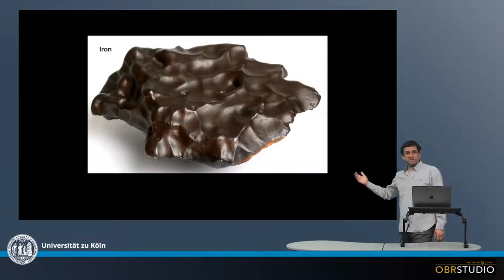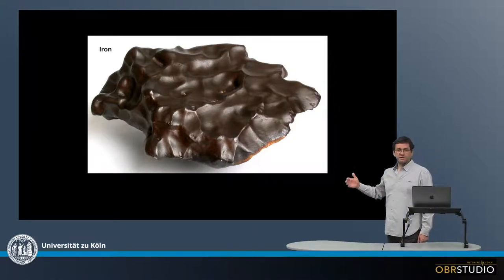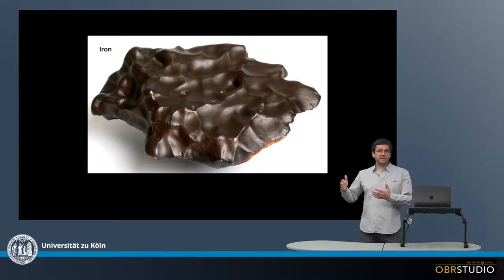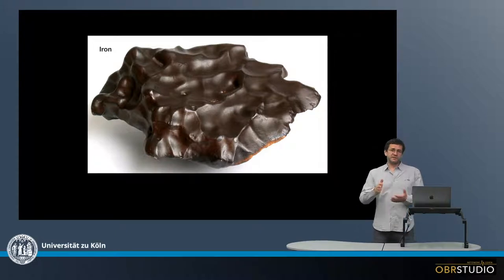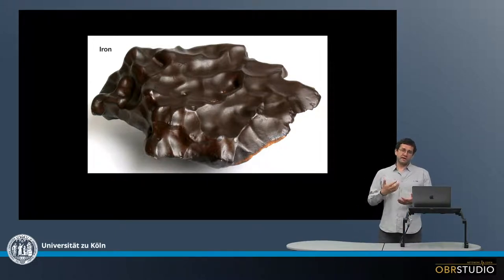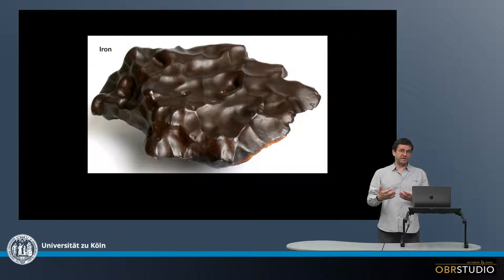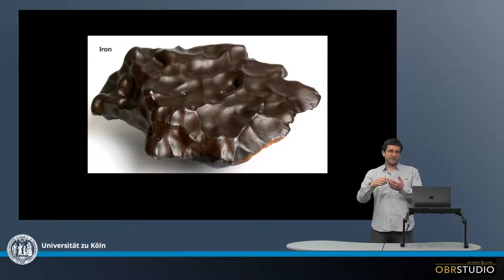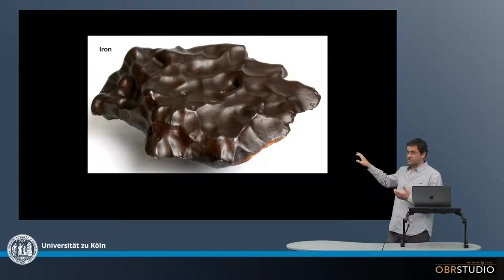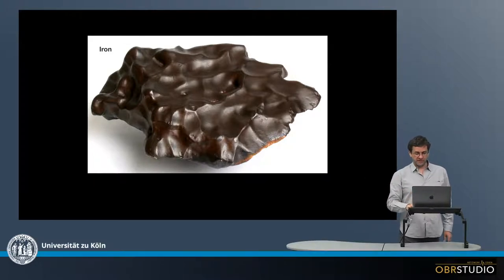This is an iron meteorite and this is from the outside. You can see this quite indented surface here, which forms while the meteorite is traveling through the Earth's atmosphere, is getting hot, and some small eddies from the atmosphere then produce these indents, which are called regmaglypts.